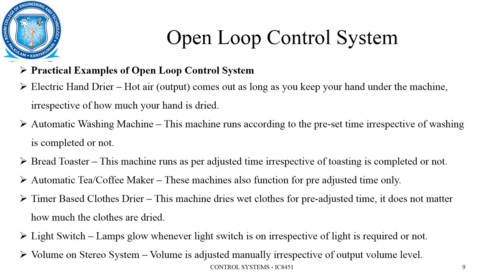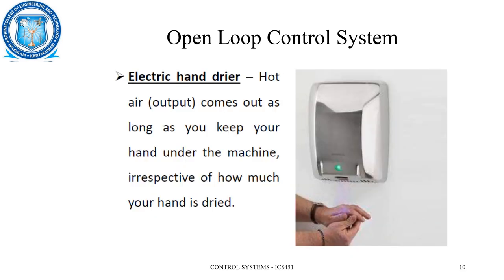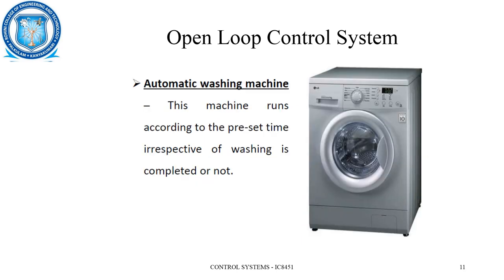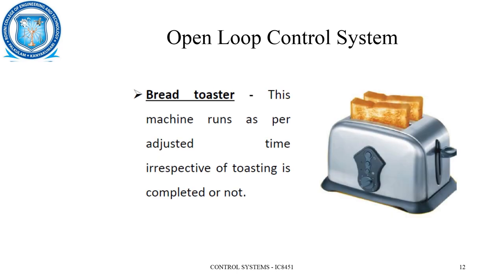Some practical examples of open loop systems are: electric hand dryer, automatic washing machine, bread toaster, automatic tea or coffee maker, time-based clothes dryer, light switch, and volume on a stereo. For the hand dryer, you keep your hand under the machine irrespective of how much your hand is dried — that is not sensed, so there is no feedback. The automatic washing machine runs according to a preset time irrespective of whether washing is completed or not. Similarly, the bread toaster runs as per the adjusted time irrespective of whether toasting is completed.